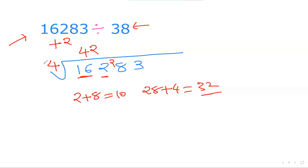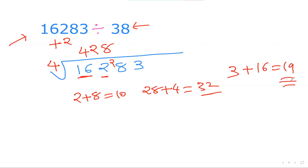Now 32 divided by 4: 4×8=32, so I put down 8, no remainder. I'm left with the last digit 3, but again I add 8×2=16, giving 3+16=19. So the remainder is 19. The answer to 16283 ÷ 38 is 428 remainder 19. Once you practice this, it's a really cool method.